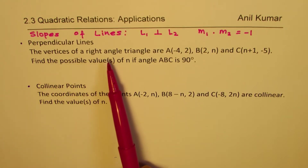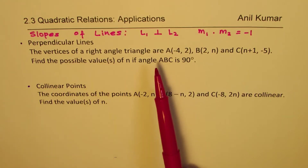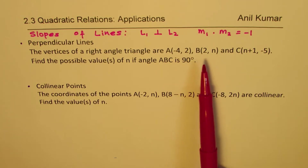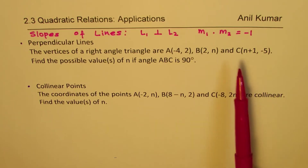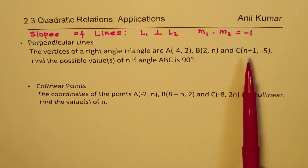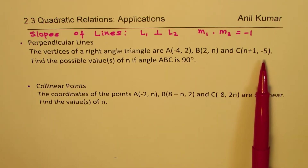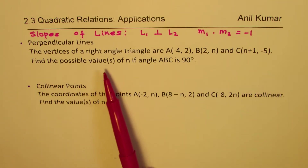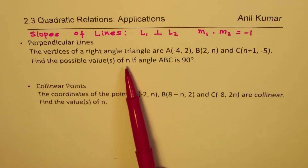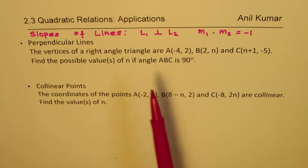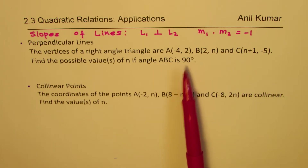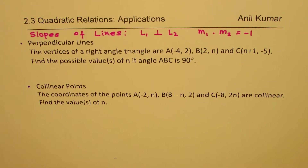The first question is: the vertices of a right angle triangle are A(−4, 2), B(2, N), and C(N+1, −5). Find the possible values of N if angle ABC is 90 degrees.